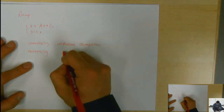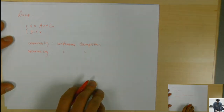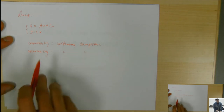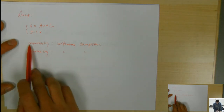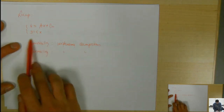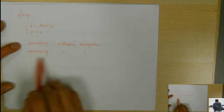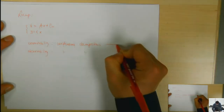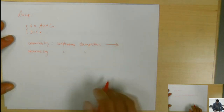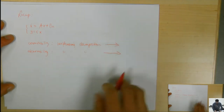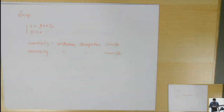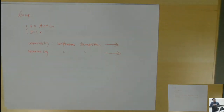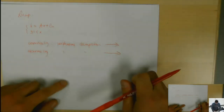Same thing for observability. The reason that we spent effort figuring out whether these properties are satisfied or not is because they relate to two important design tools in feedback controls.